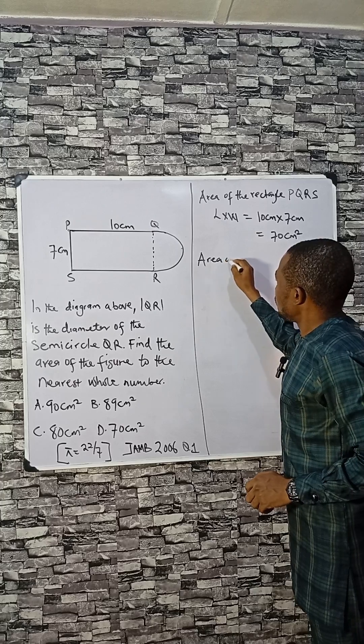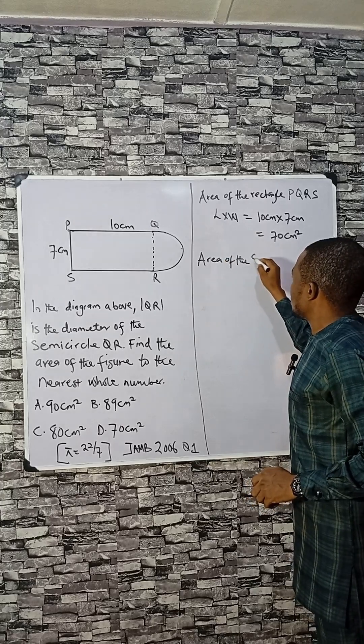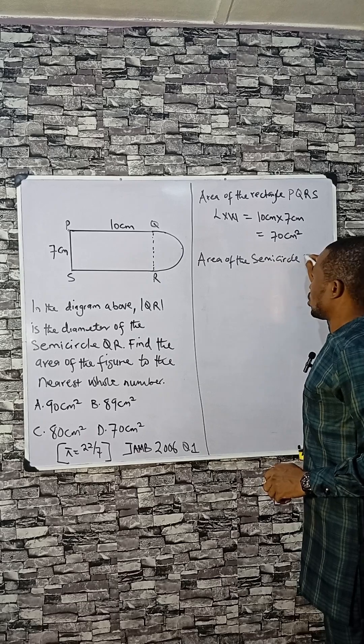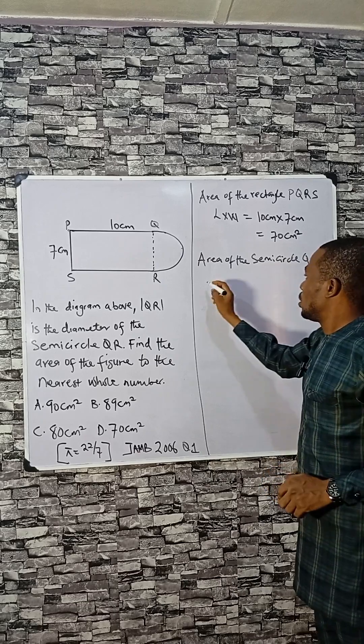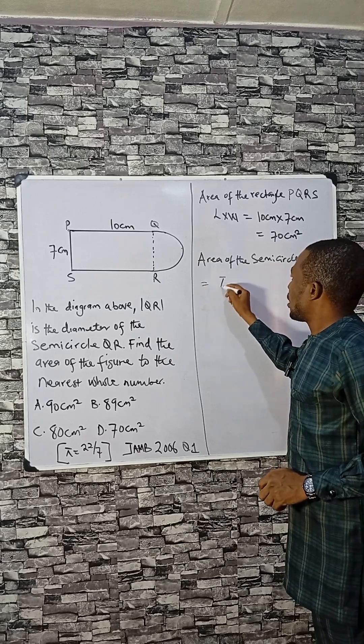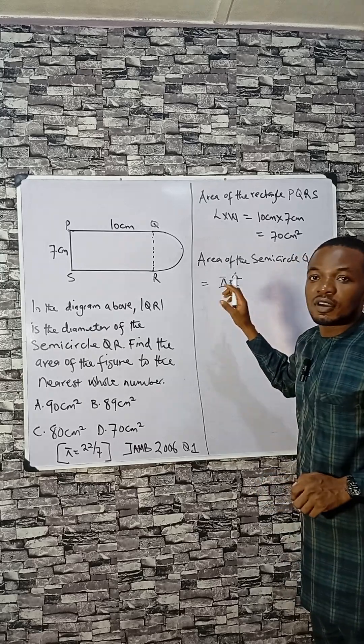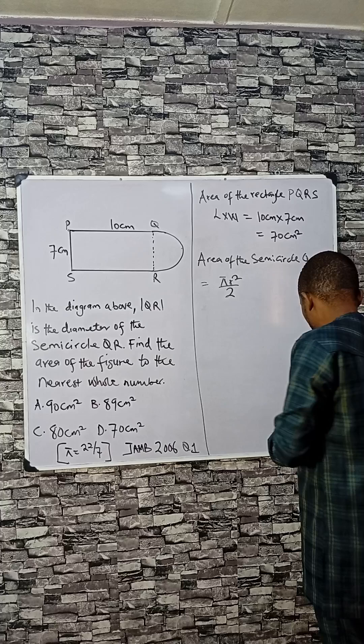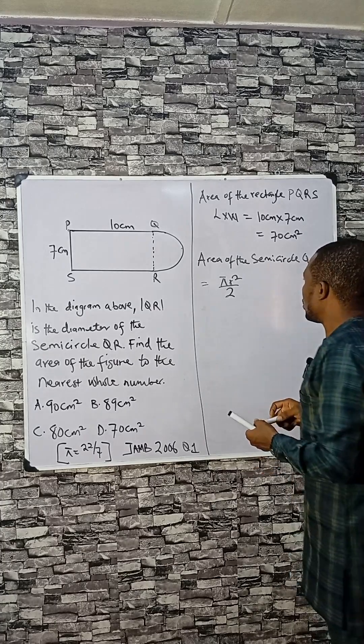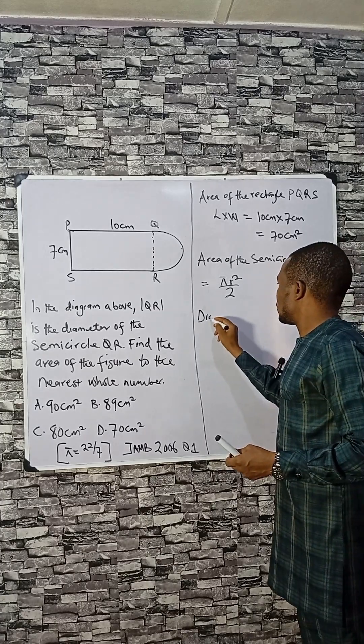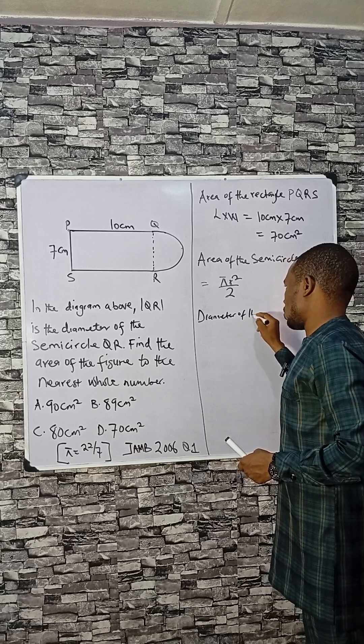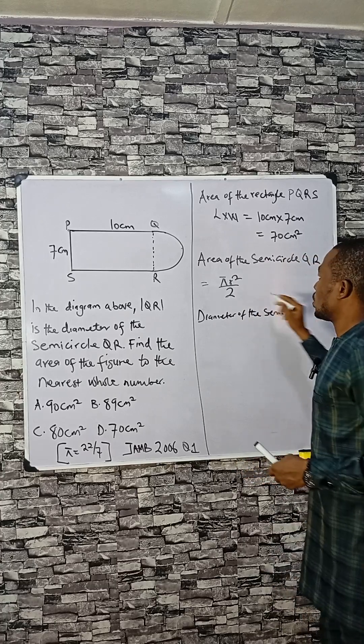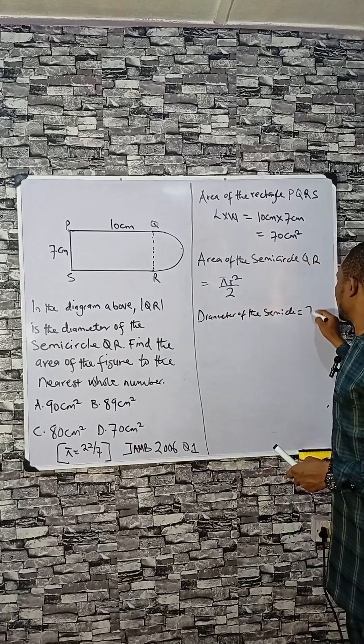The area of the semicircle QR is given by πR squared divided by 2. It is divided by 2 because it is not a complete circle, it is a semicircle, half of a circle. The diameter of the semicircle is QR, which is 7 cm.